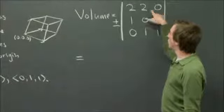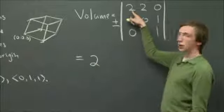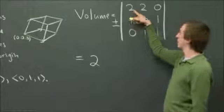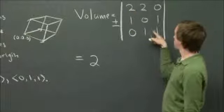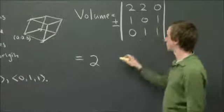Remember, what we do is take the first entry in the row and multiply by the minor we get by covering up that row and column. So we have this little 2 by 2 determinant, which looks like minus 1.